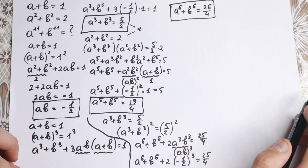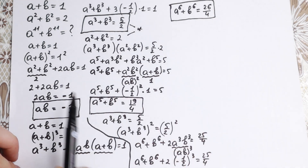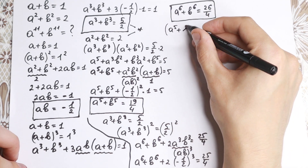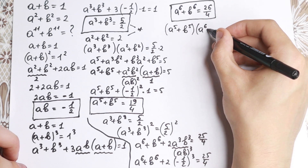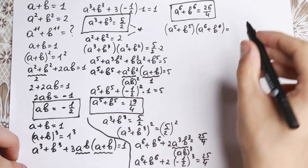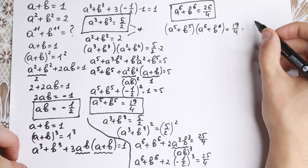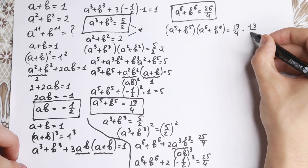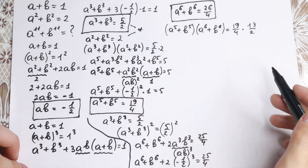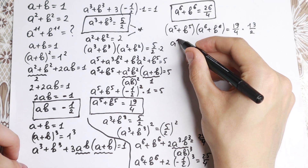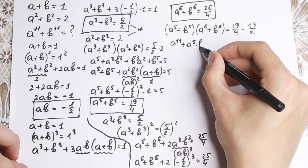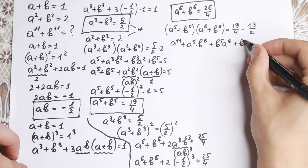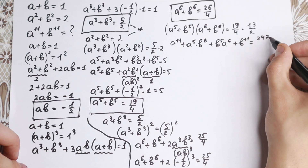Now for the last step: we have a to the fifth plus b to the fifth equals 19 over 4, and a to the sixth plus b to the sixth equals 26 over 4. Multiplying both parentheses: (a to the fifth plus b to the fifth) times (a to the sixth plus b to the sixth) equals 19 fourths times 26 fourths, which simplifies to 13 over 2. Expanding: a to the 11th plus a to the fifth·b to the sixth plus b to the fifth·a to the sixth plus b to the 11th equals 247 over 8.